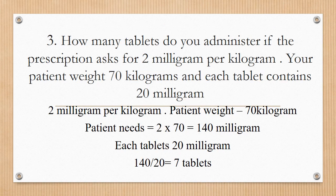Third question: how many tablets do you administer if the prescription asks for 2 milligrams per kilogram? The patient weighs 70 kilograms and each tablet is 20 milligrams. The patient needs 2 × 70 = 140 milligrams. Each tablet is 20 milligrams, so 140 divided by 20 equals 7 tablets.